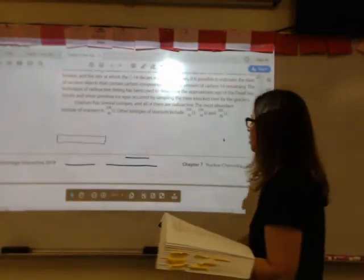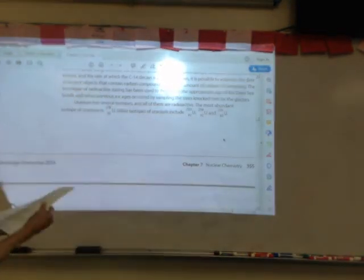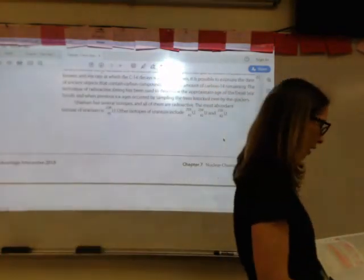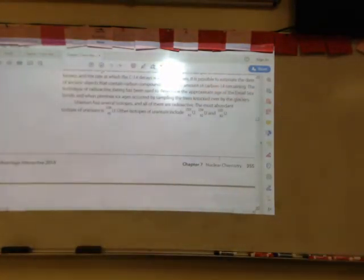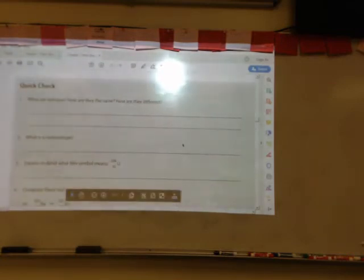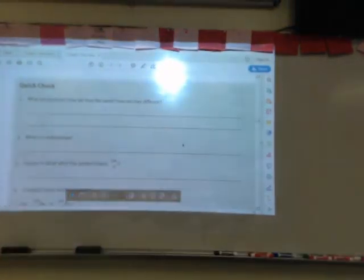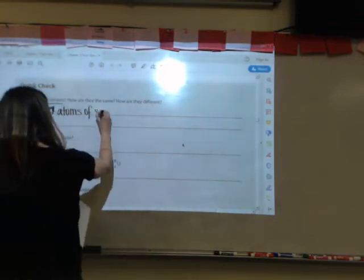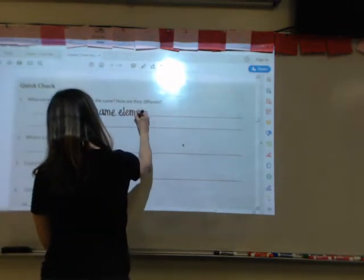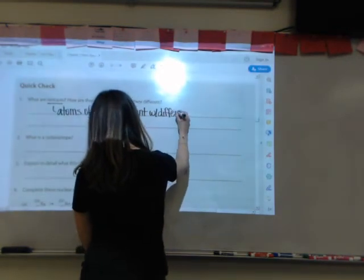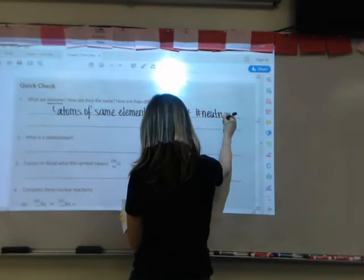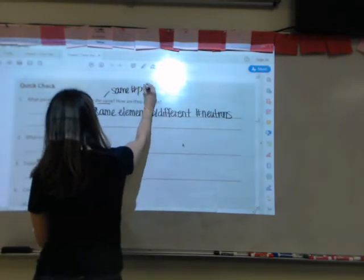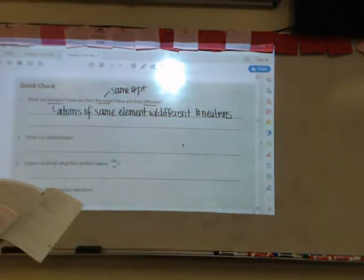Let's move on here to talk about uranium. Uranium has several isotopes, and all of them are radioactive. The most abundant isotope of uranium is uranium-238. Other isotopes would be uranium-233, 234, and 235. If you take a look here at the quick check, it says, what are isotopes, how are they the same, and how are they different? Isotopes are atoms of the same element with different numbers of neutrons. They're the same because they have the same number of protons, but they're different because they have different numbers of neutrons. What is a radioisotope? This is an unstable radioactive isotope.